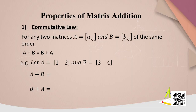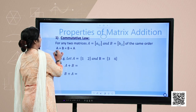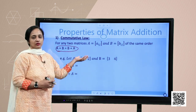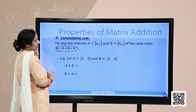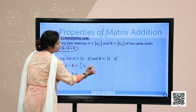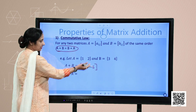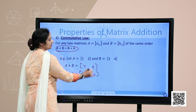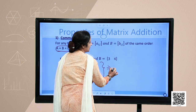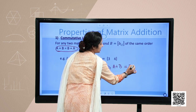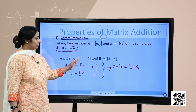Let us study a few properties of matrix addition. The first is the commutative law. For any two matrices A and B of the same order, A plus B equals B plus A. For example, with matrix A = [1, 2] and matrix B = [3, 4]: A plus B gives 1+3 and 2+4, while B plus A gives 3+1 and 4+2. Both give the same result, proving commutative law for the given matrices.